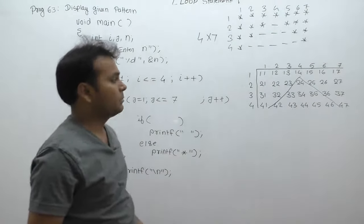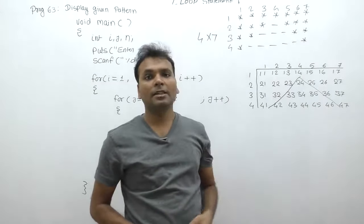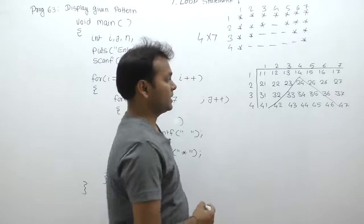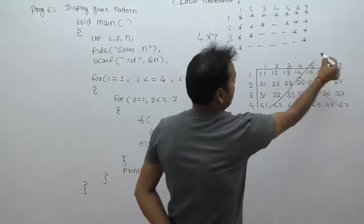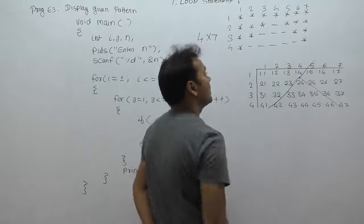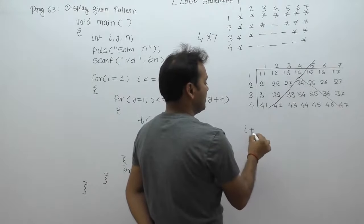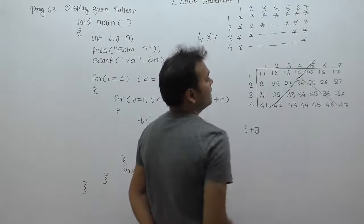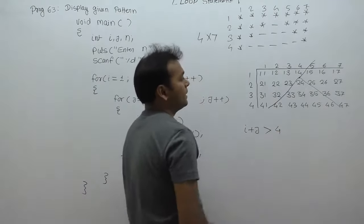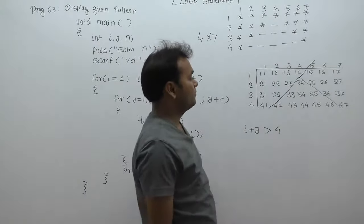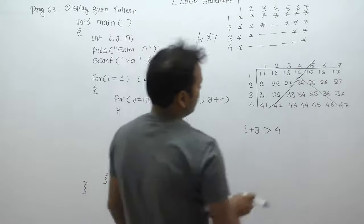The next condition: the right-hand side is i plus j, and greater than... greater than 4... sorry, we made a mistake - greater than 5.